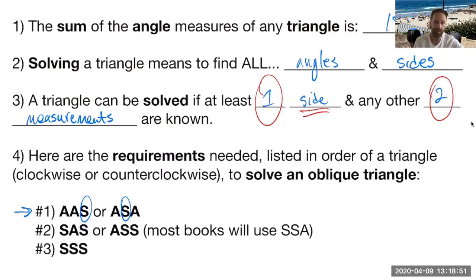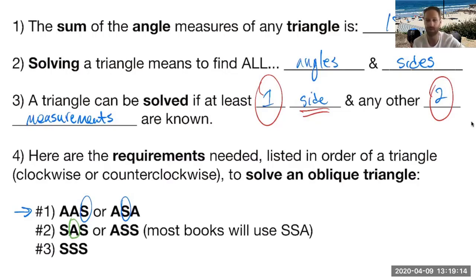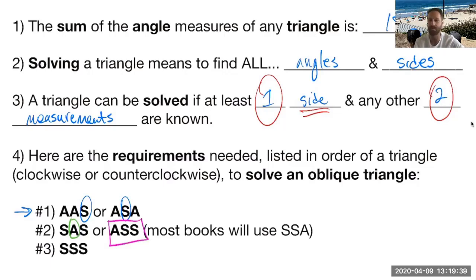If we had two sides and one angle, we like to call this an included angle when it's in between, so we say side-angle-side. Some of this may sound familiar from geometry when finding congruence between two triangles. There's also what I call ASS — most books use SSA for obvious reasons — but that has a special case we'll talk about in the next section. Then the third scenario is three sides.